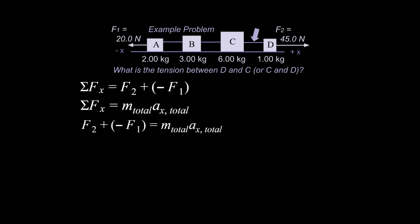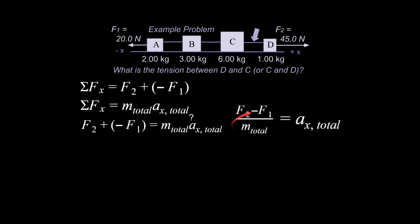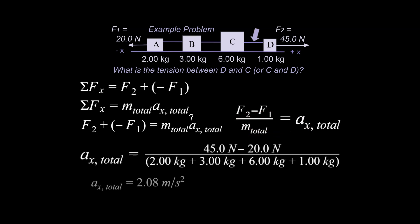We set the two expressions equal to each other and consider what we know. Our acceleration is not zero — it's the variable we're solving for. We isolate for acceleration, plug in the numbers, and get our answer. That overall acceleration for the entire system is also the acceleration for each individual component, since they're all moving in unison.